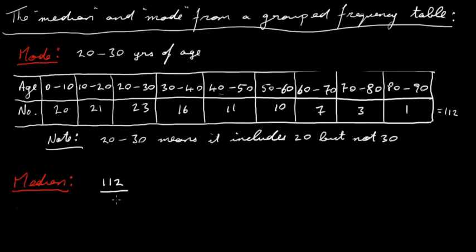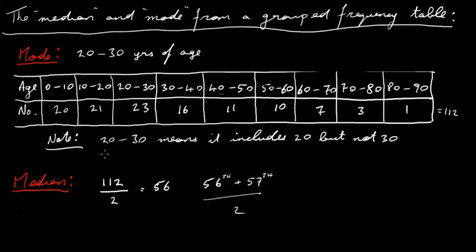The middle number is going to be — if we divide 112 by 2, we get 56. So the median is going to be the 56th and the 57th number, and we just take those and divide them by 2. It's going to be the 56th age and the 57th age, add them and divide by 2. Now we don't know the individual ages here — we're not given the original data — but we can look at which group the 56th and 57th age is in.